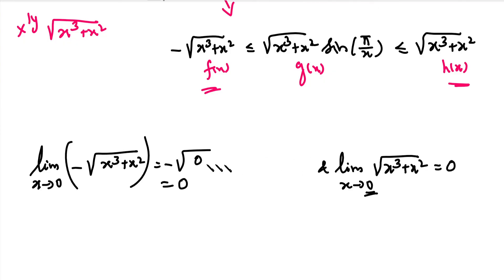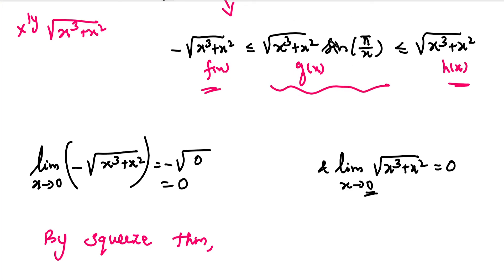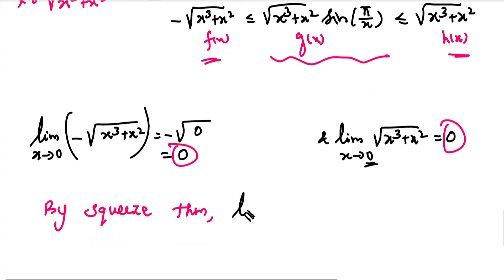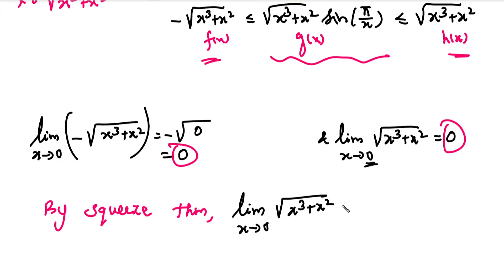Since the limit values of f(x) and h(x) are both equal to 0, by the Squeeze Theorem, the limit of the middle function g(x) is also equal to 0. That is, limit x tends to 0 of √(x³ + x²) · sin(5/x) = 0.